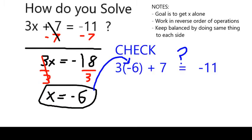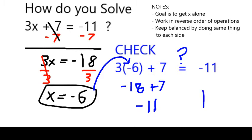I can check this by putting negative 6 into the original equation and see if it is, in fact, a solution. 3 times negative 6 is negative 18. And now if I do negative 18 plus 7, that means it's going to become less negative, and it will, in fact, equal negative 11. So this does check out, and I know that the value x equals negative 6 is a correct solution to my original equation.